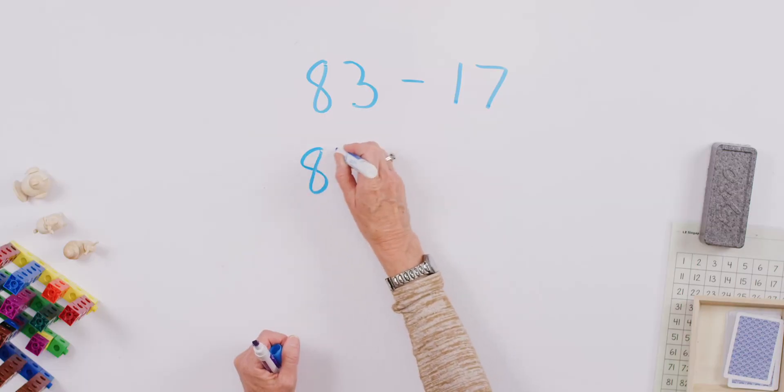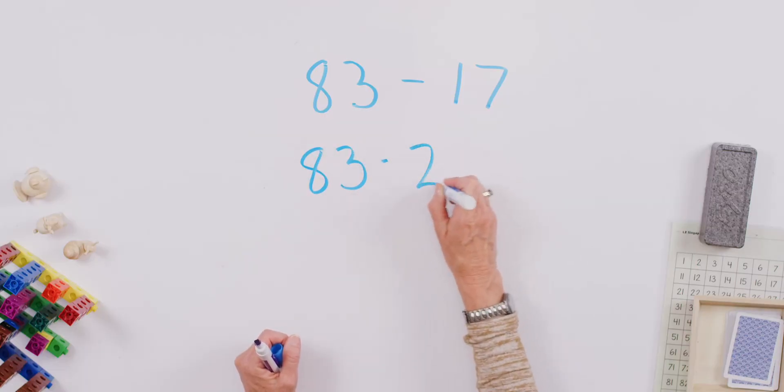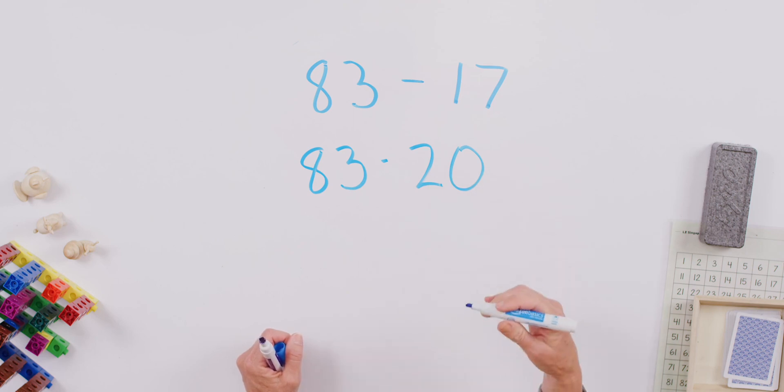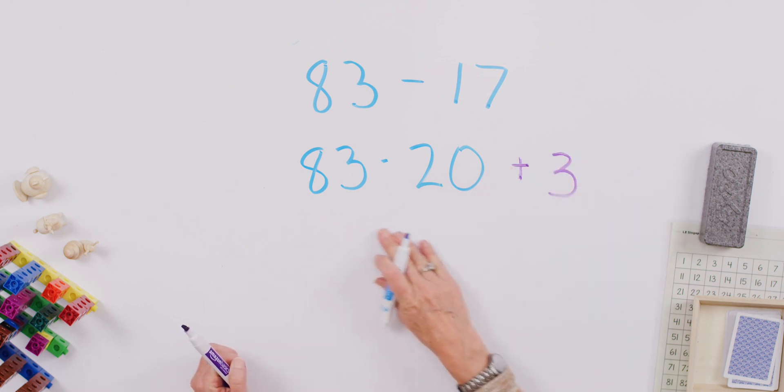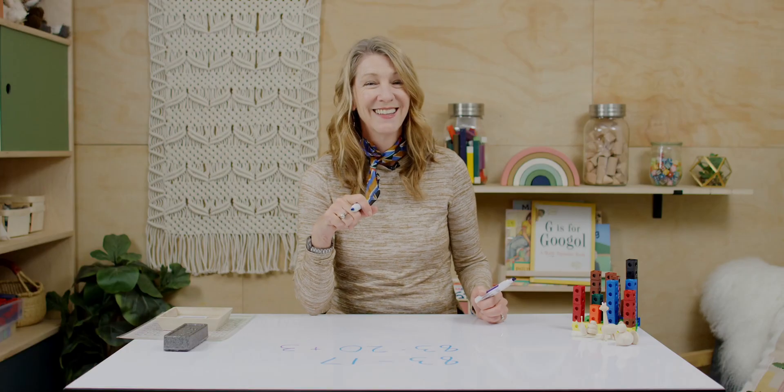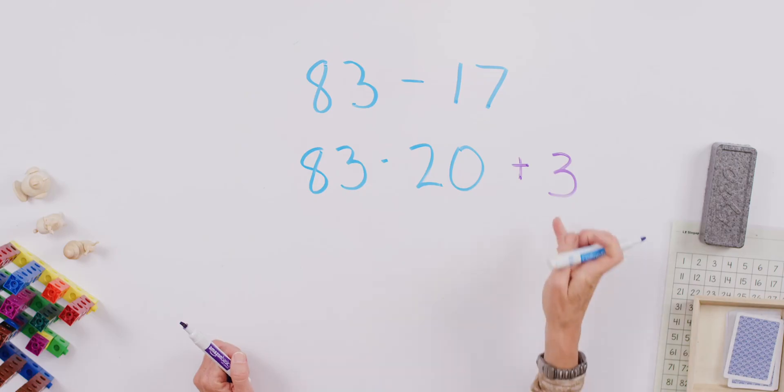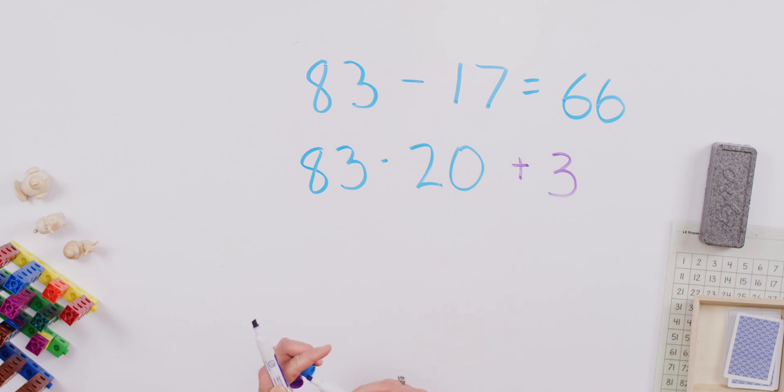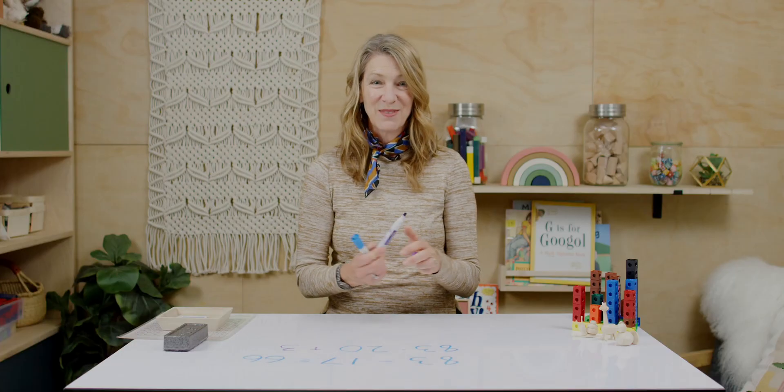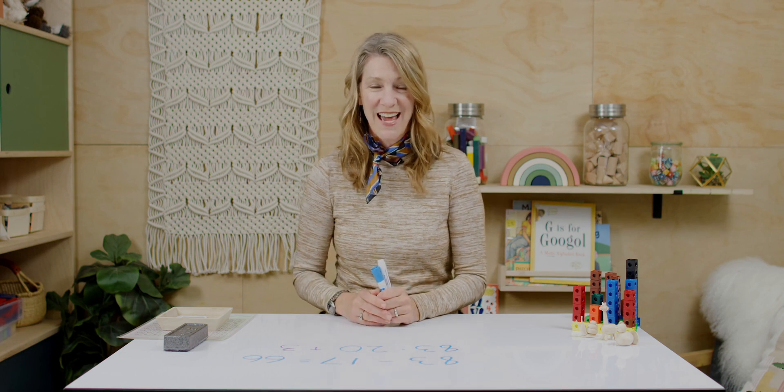So I can think of this as 83 minus 20. But 20 is how many more than 17? It's three more. So we have to add that three back in. So 83 minus 20 gives us 63. Let's add three to that. And that'll give us 66 as our answer. See how that comes in handy? I've got a few more for you. We're going to look at a different kind of strategy next.